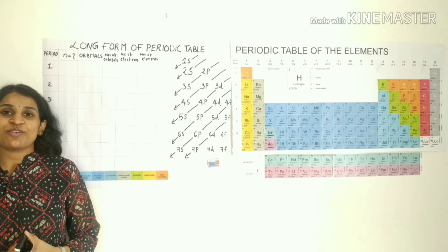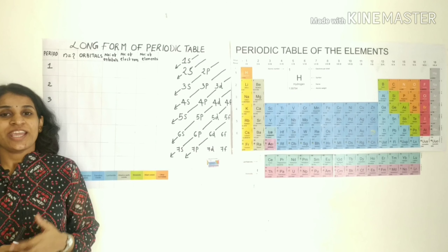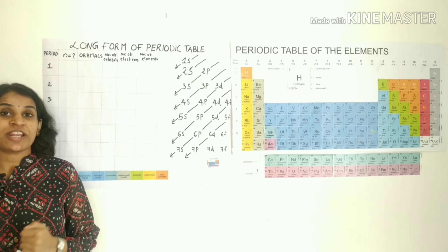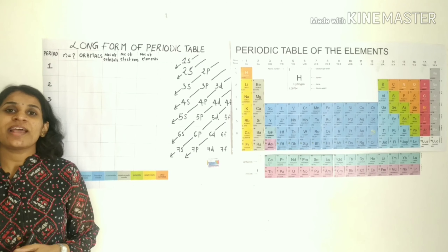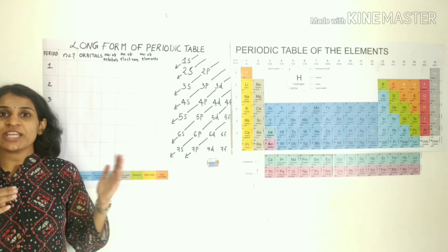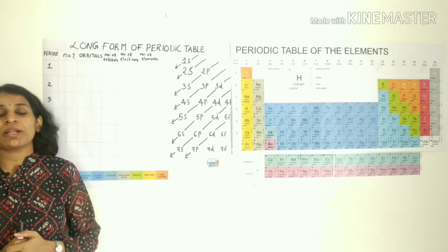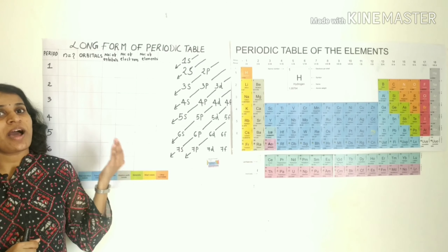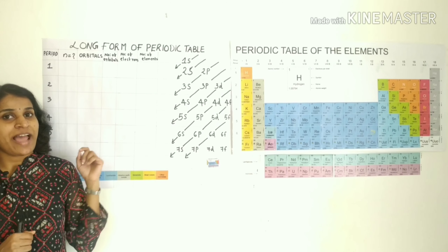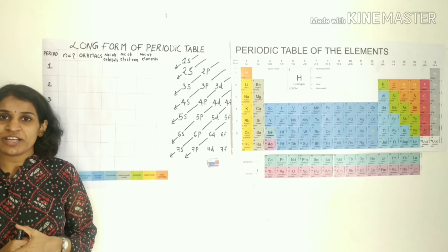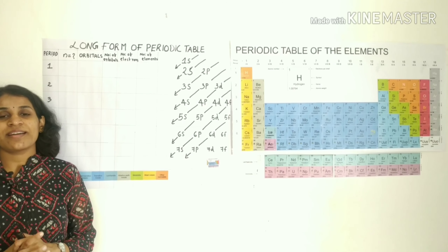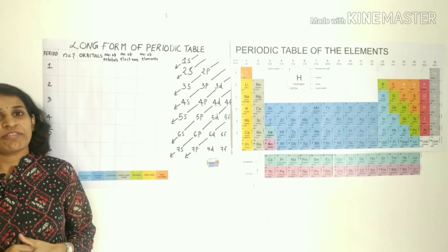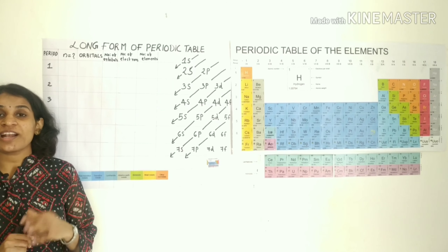The structural features of the Long Form of Periodic Table are based on electronic configuration. Because of the classification of elements, the periodic table is arranged on the basis of similar valence electronic configuration, and the periodic table is constructed in the same blocks.